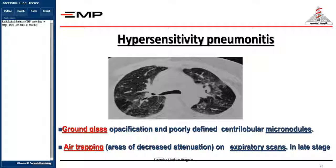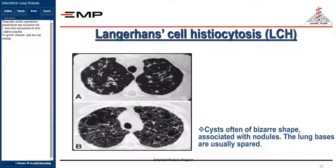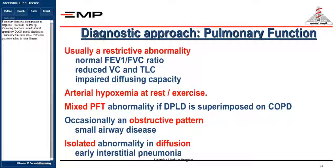Stages include acute, subacute, or chronic. Peripheral pneumonia improved mainly by steroids. Young male smoker with spontaneous pneumothorax may be associated with bone aches and punched-out ulcers. In histiocytosis X, there is no specific treatment; the main line is to stop smoking.